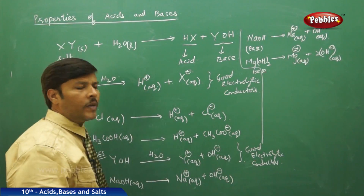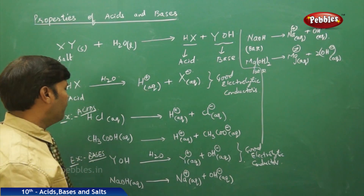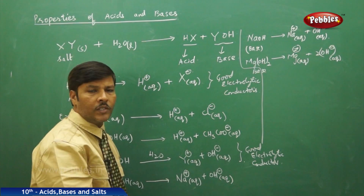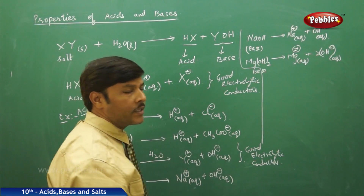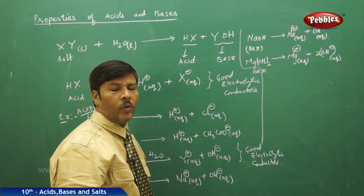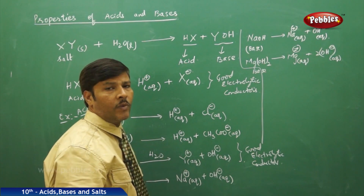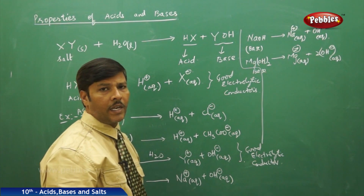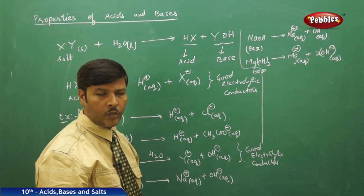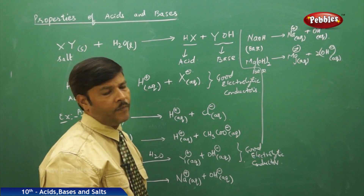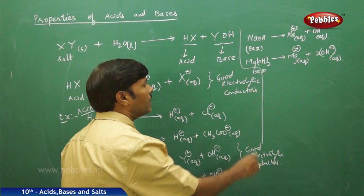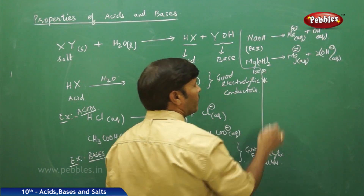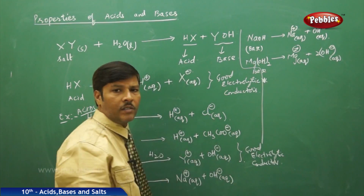By this, we are able to clearly understand that bases always give OH- ions and acids always give H+ ions. Acids are characterized by the formation of H+ ions and bases are characterized by the formation of OH- ions. Let us go for a simple generalization of acids and bases.